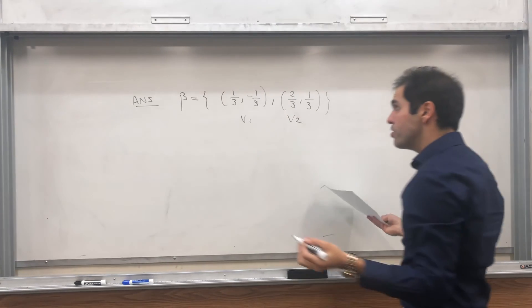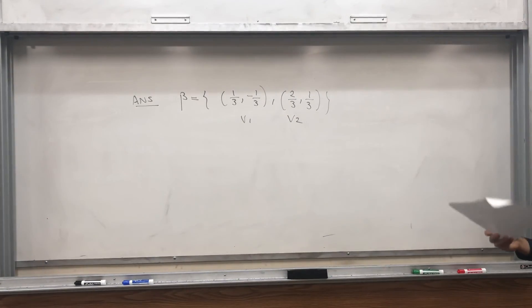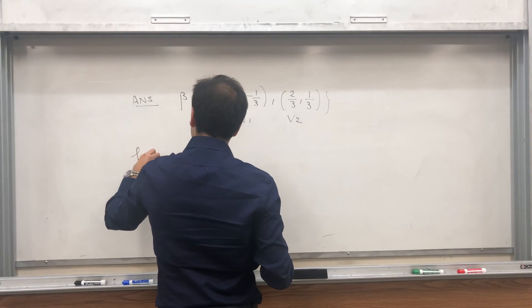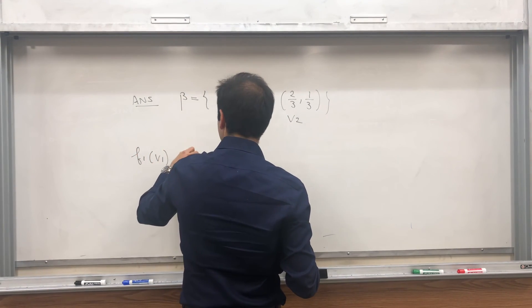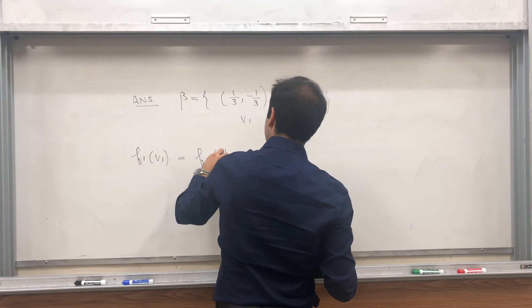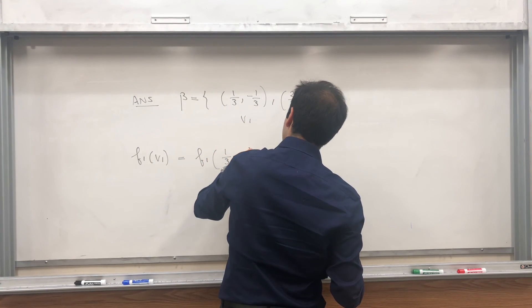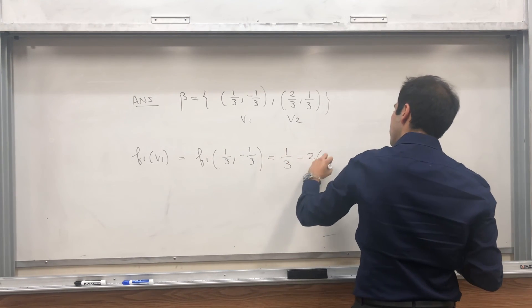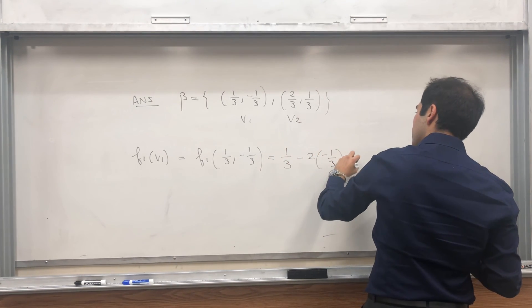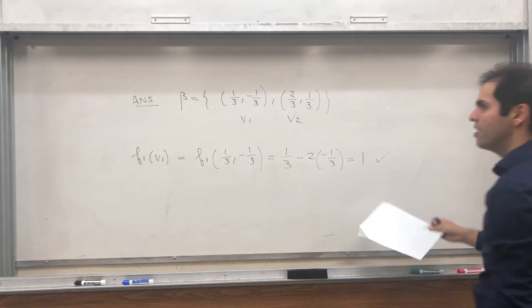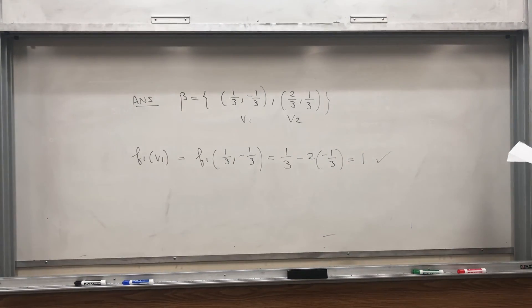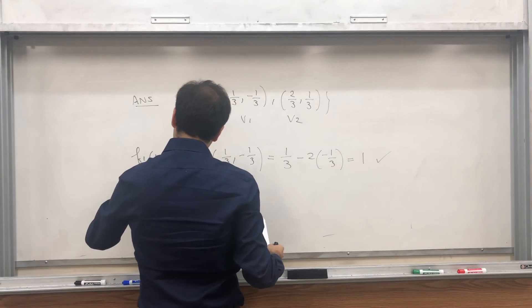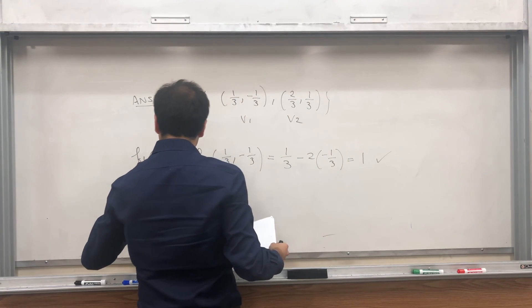And here's a cool thing. Using that, you can easily check if your answer is correct. For example, let's check that F1 V1 equals 1. But F1 V1, it's 1 third minus 1 third, and that's 1 third minus 2 times minus 1 third. And you can check that this is 1, and continue, show that F1 of V2 equals 0.